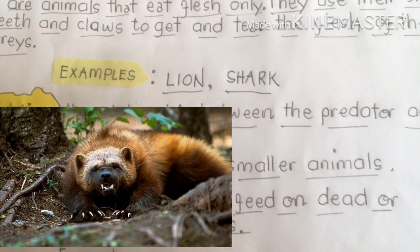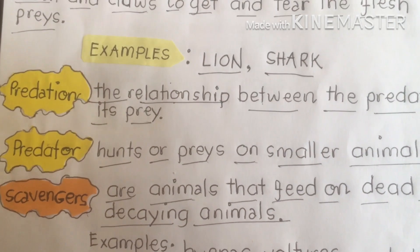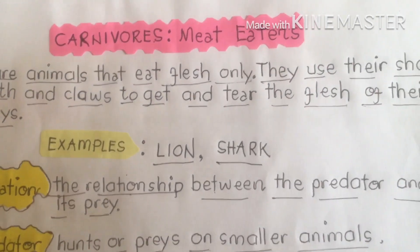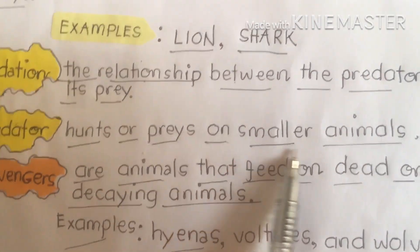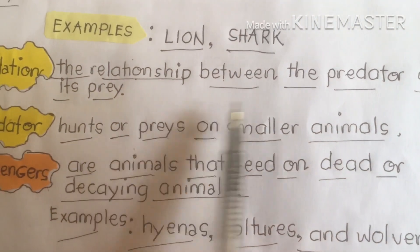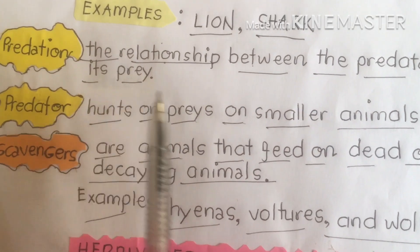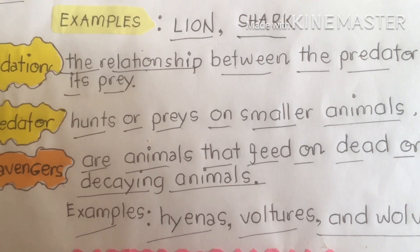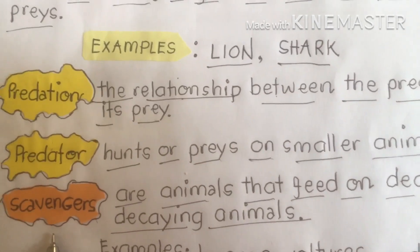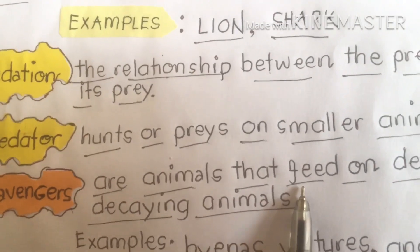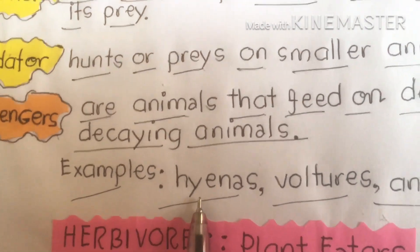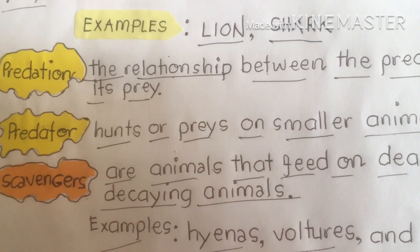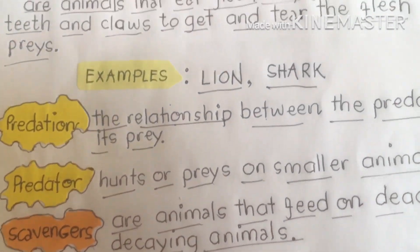Scavengers, predators, and predation all belong to carnivores. Carnivores use their body parts to hunt. Most carnivore animals are predatory — a predator hunts or preys on smaller animals. There are also carnivores that do not hunt their prey; instead they feed on dead or decaying animals. These are scavengers. Examples include vultures and wolverines. Let's now proceed to herbivores.